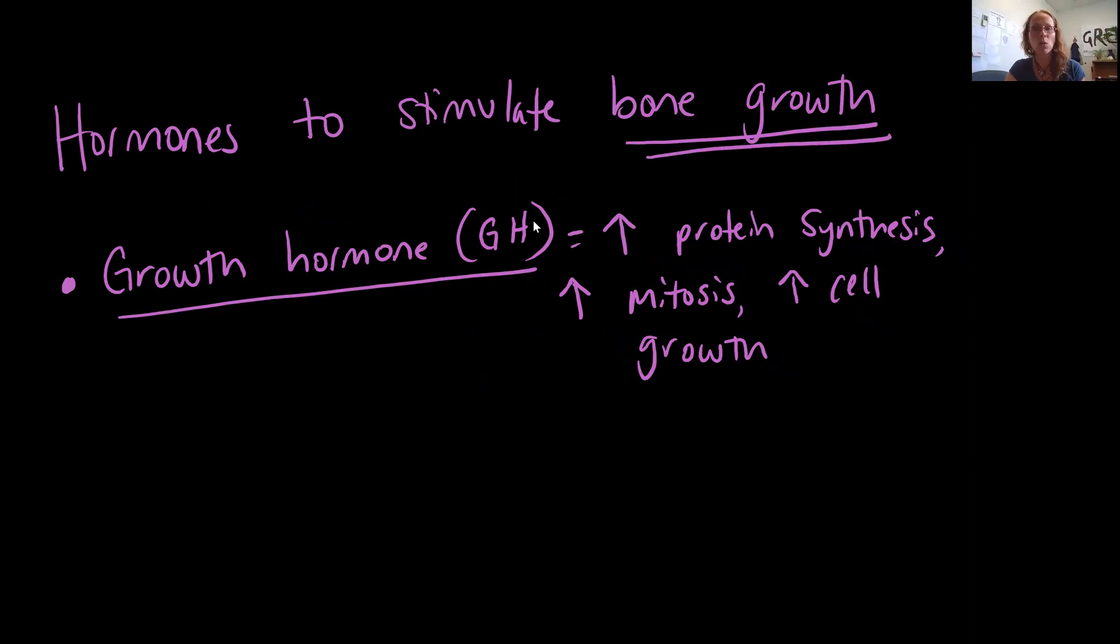We will see hormones involved in bone growth including growth hormone. Growth hormone will trigger the increase of protein synthesis, so think of those collagen fibers that are important for the strength and flexibility of our bone. It's going to trigger an increase of mitosis so you have those osteogenitor cells that are mitotically dividing to make more osteoblasts, and that then is going to increase our cell growth as well.